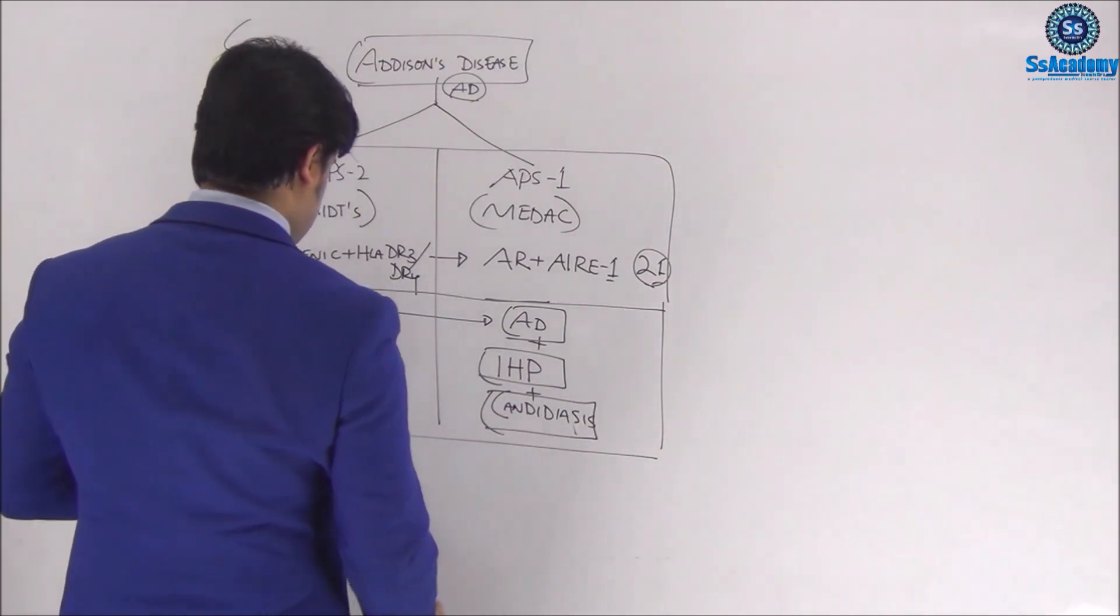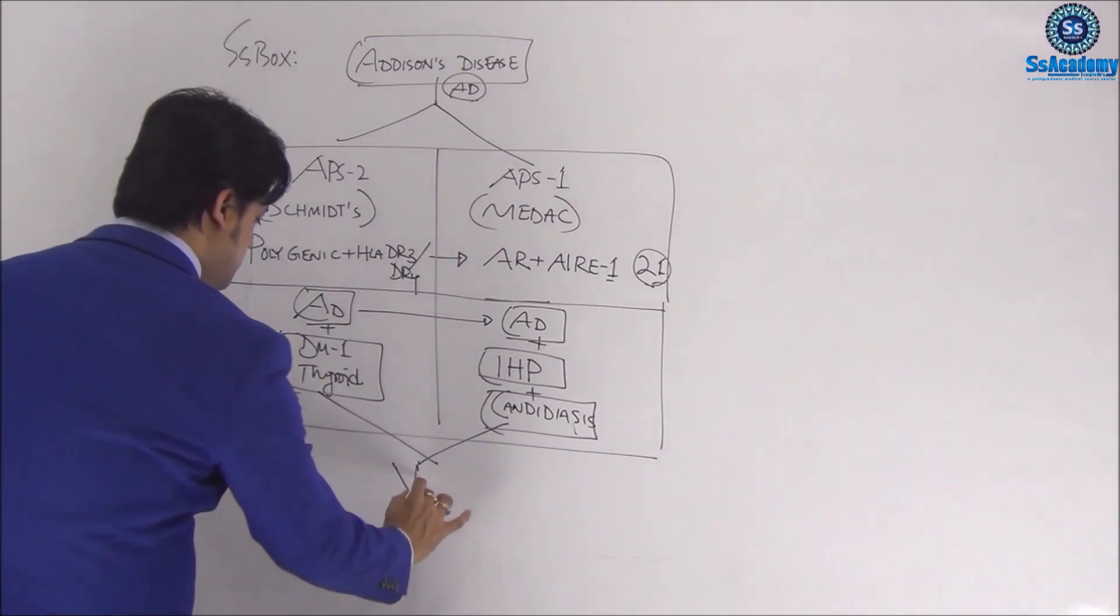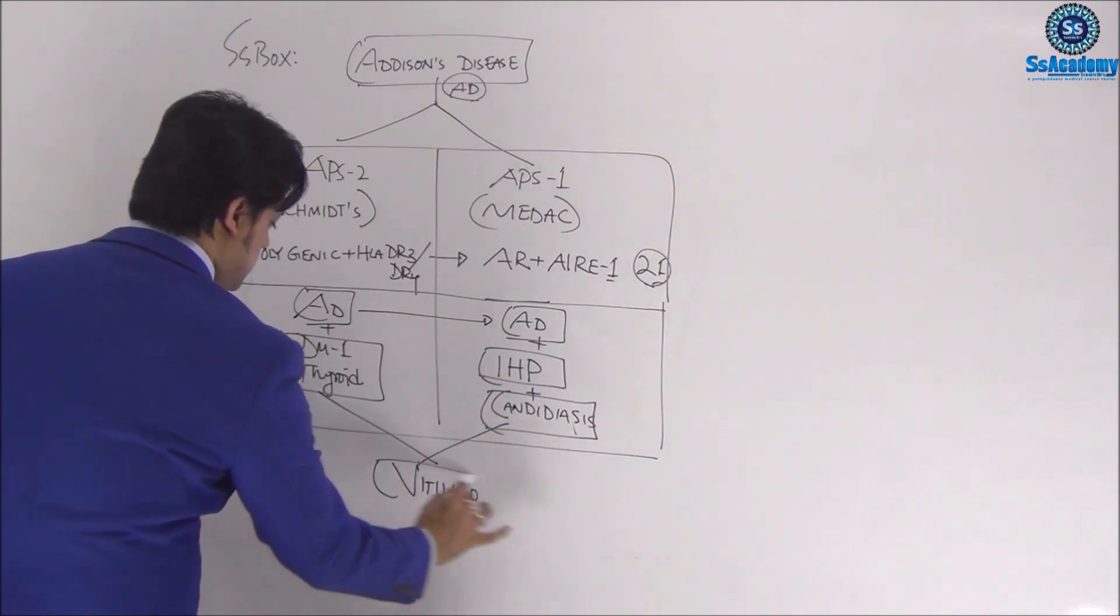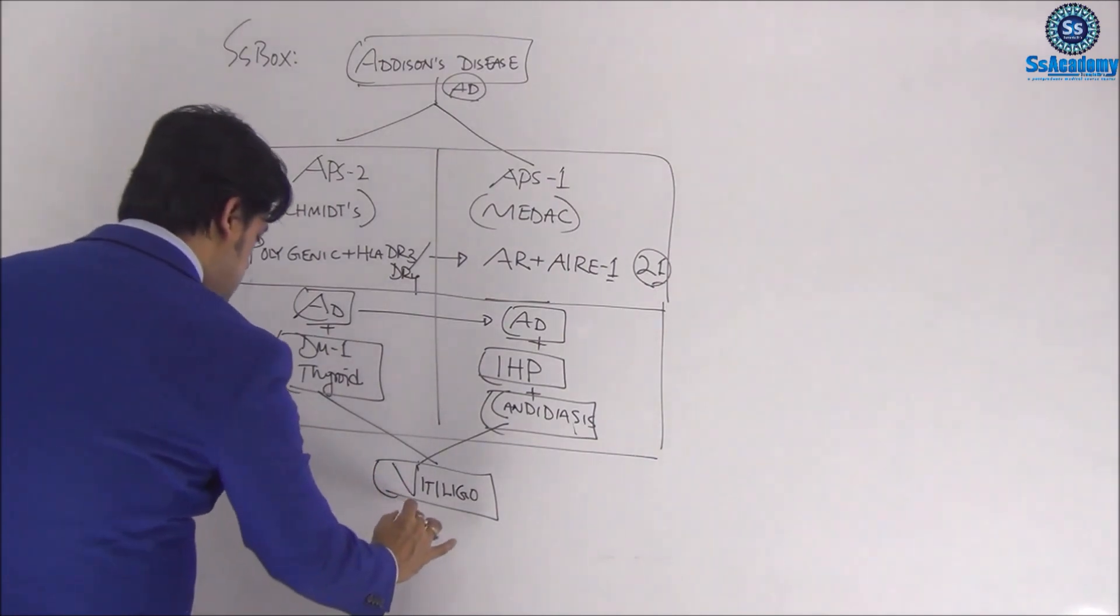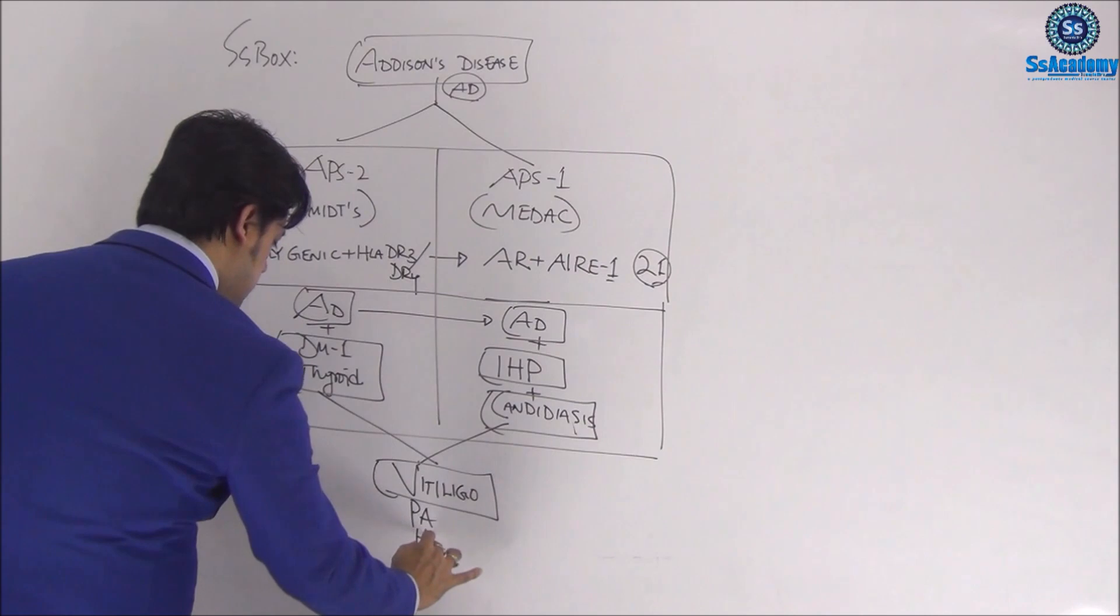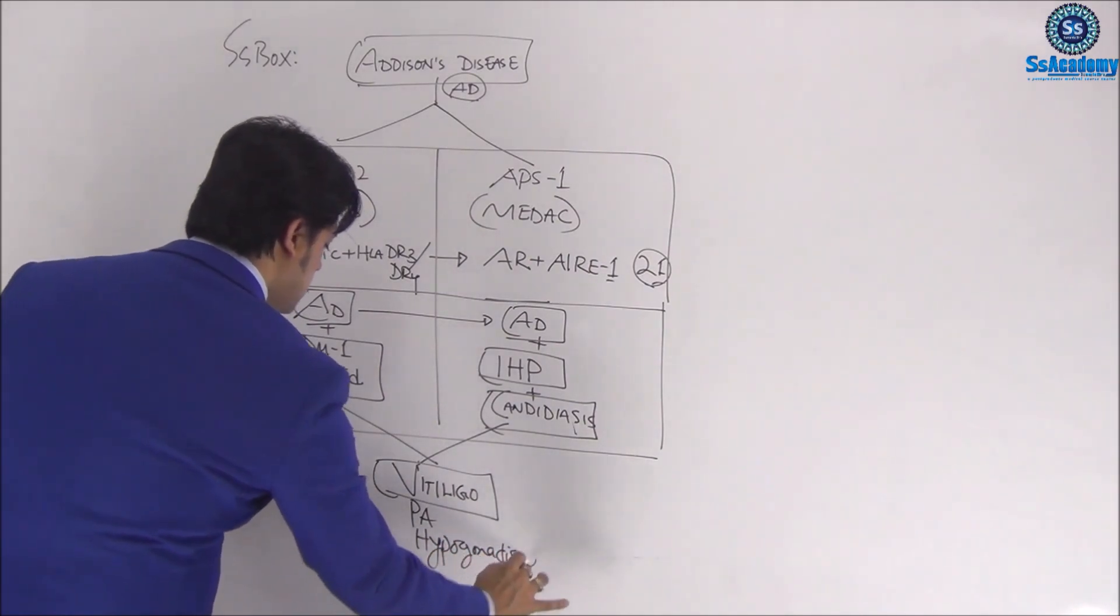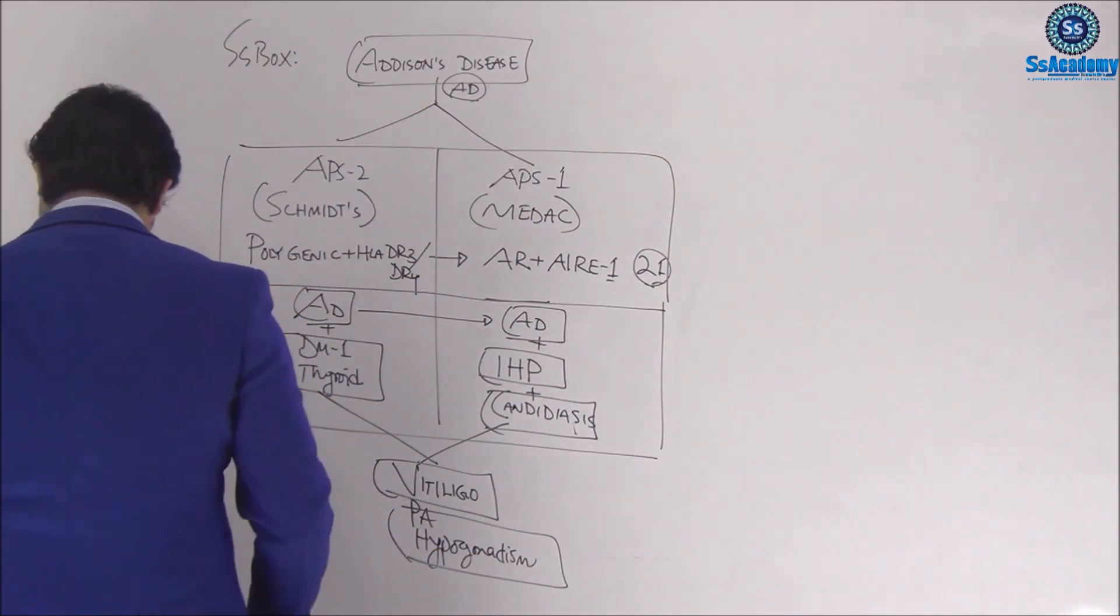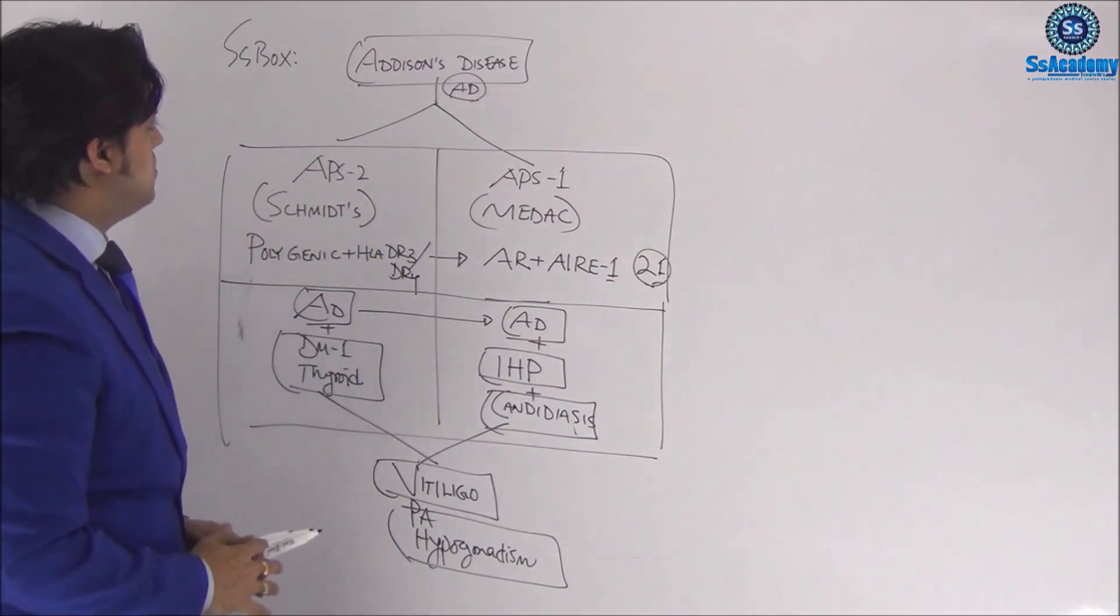Both of these we must remember are strongly associated with vitiligo. Just write it down—this usually comes up in your exam as a five-star topic. Also, we need to know diseases like pernicious anemia and hypogonadism.